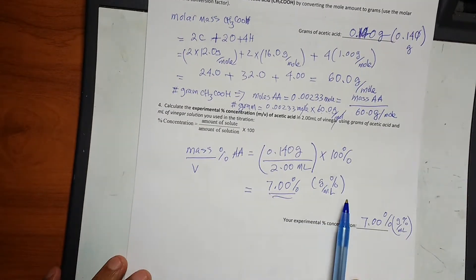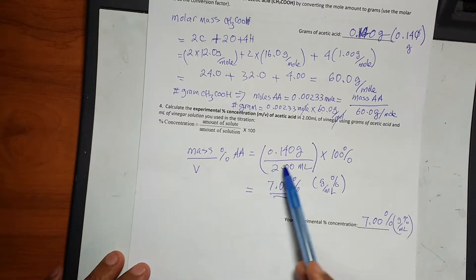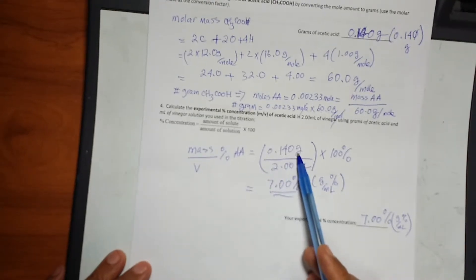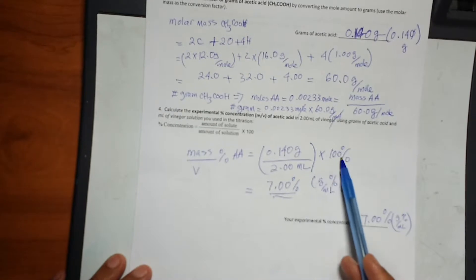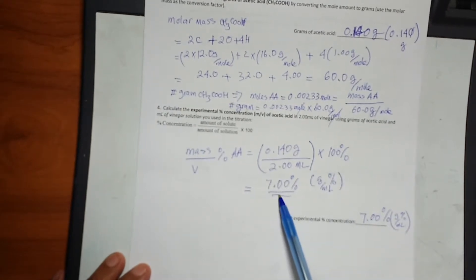Furthermore, we have to calculate mass over volume percentage. We have the grams, 0.140 grams, and we use 2.00 mLs, multiply by 100, came out to be 7 percentage.